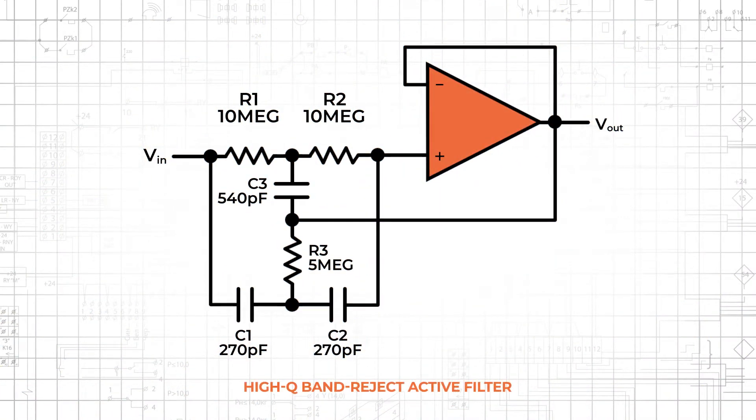Shown here is a high Q band-reject active filter based on a twin T network topology with a notch frequency of 60 Hz to filter power line interference.